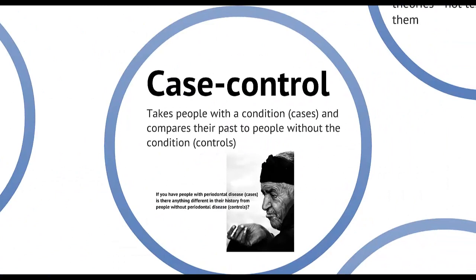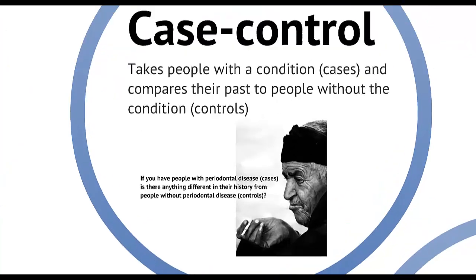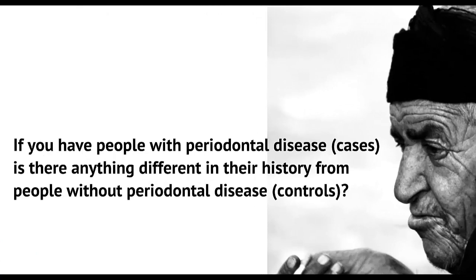Case control studies can easily be confused with cohort studies, but they start at the end rather than at the beginning. Researchers identify people who have already got the disease, rather than those exposed to a risk factor that might cause the disease. These people are known as the cases. The control group is similar in as many ways as possible to the cases, but they don't have the disease. The study then looks back at the two groups' past to see if there are certain variables or risk factors associated with the cases and not the controls. For example, we might ask how much they have smoked over their lifetime, or what their oral hygiene habits have been. Case control studies are not as reliable as cohort studies in helping to establish causal relationships, but they can help to identify characteristics that researchers may want to study in a cohort study.